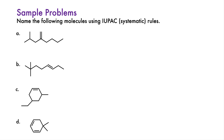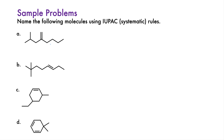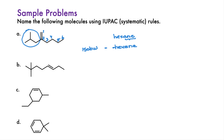Here are some sample problems. Pause and try to name these compounds using IUPAC systematic rules. The longest chain in the first problem is horizontal, but it is not the parent chain. The double bond must be included in the parent chain, so it starts at the top double bond carbon and continues on the right. There is an isobutyl substituent on the parent. The parent has six carbons, and the alkane with six carbons is hexane. We change the -ane ending to -ene — this is an isobutyl hexene. Leave a space to number the double bond. Numbering is easy: the only consideration is that the double bond must get the lowest possible number, which is 1.